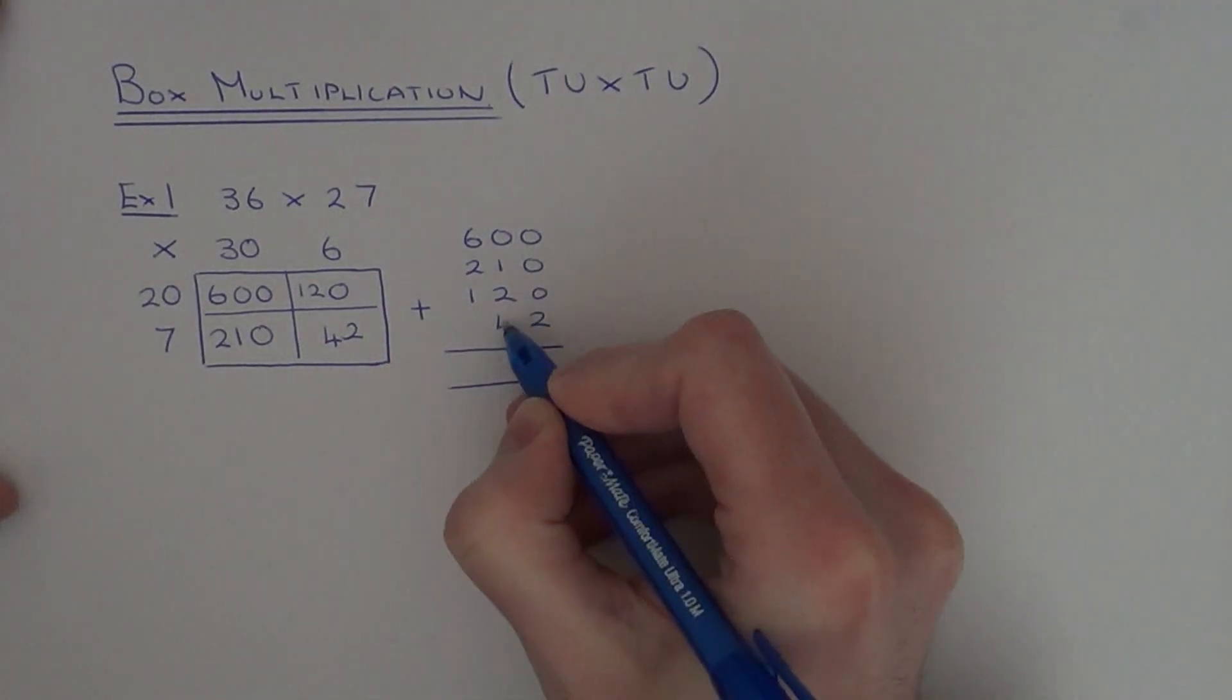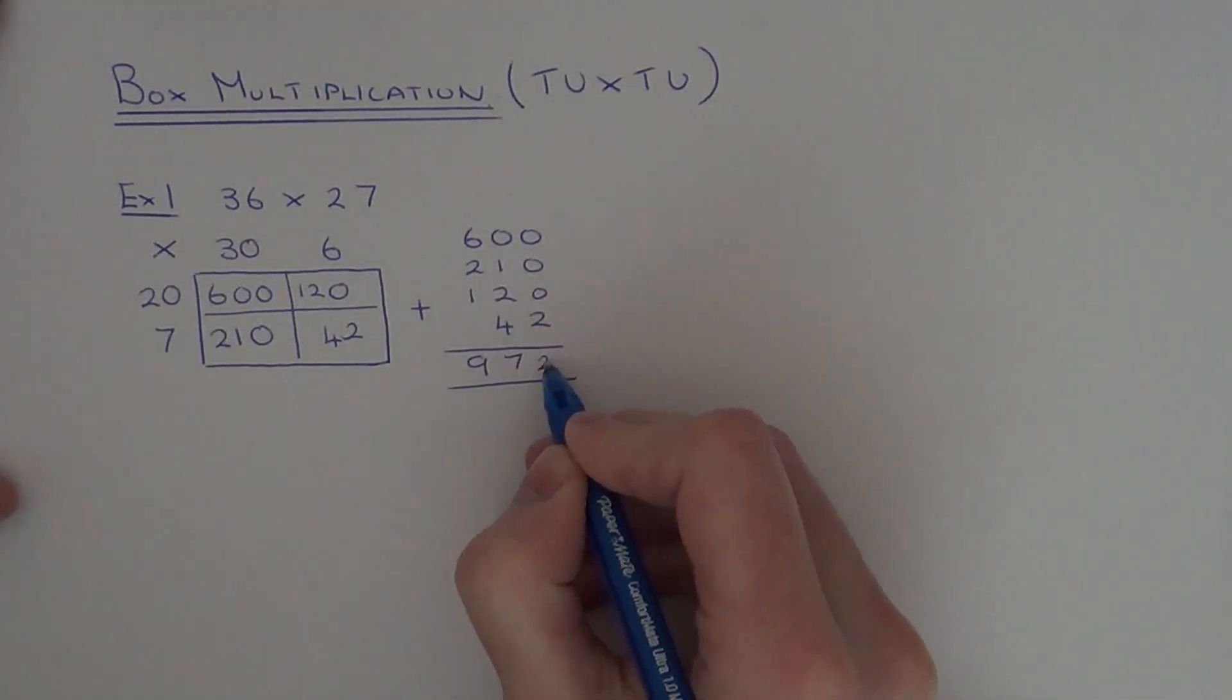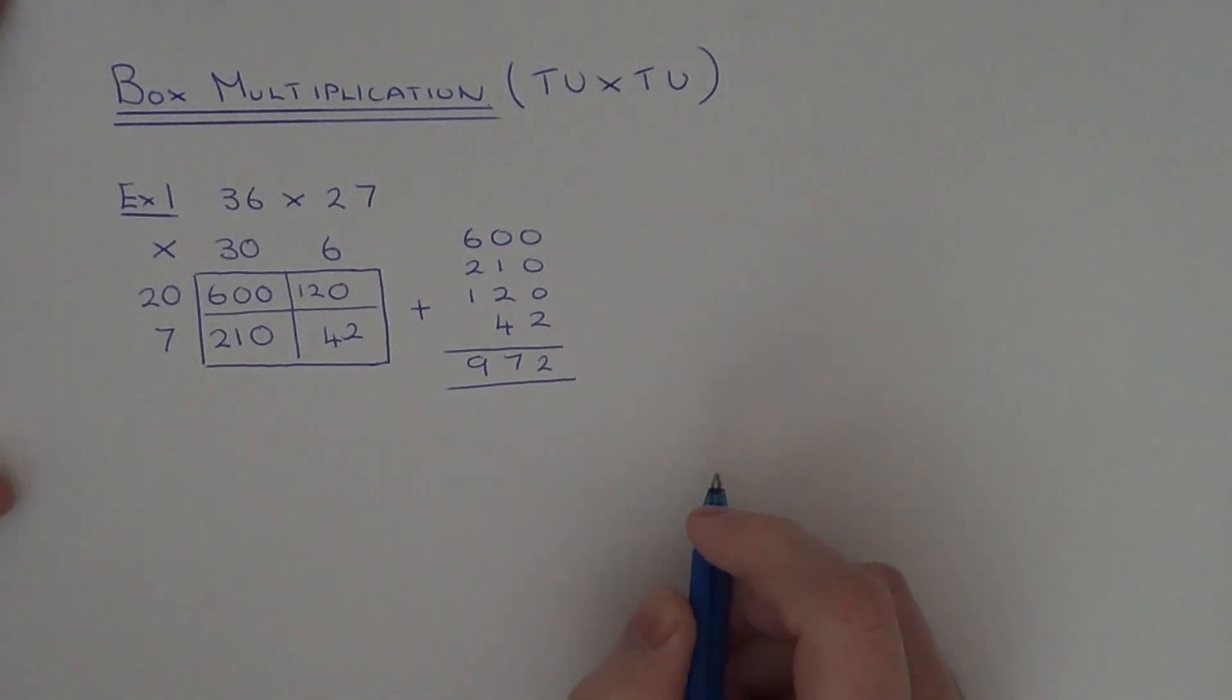So we've got 2, 4, 5, 6, 7, 6, 7, 8, 9. So our final answer is 972.